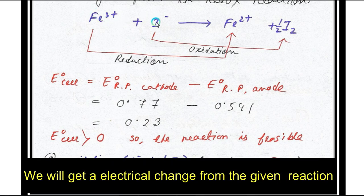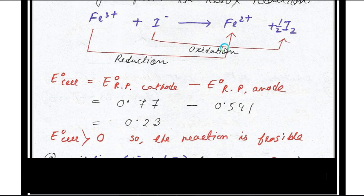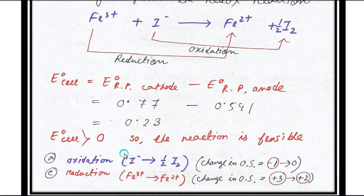To understand which is oxidation and which is reduction, look at the oxidation state changes. For Fe, the oxidation state decreases from +3 to +2, so it is reduced. For I, it goes from -1 to 0, so the oxidation state increases, meaning oxidation occurs.